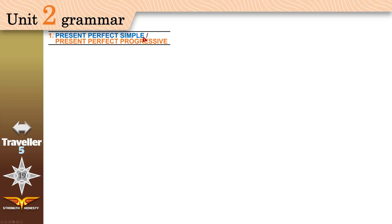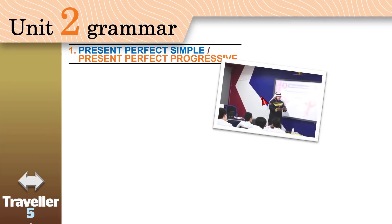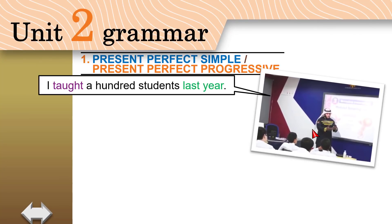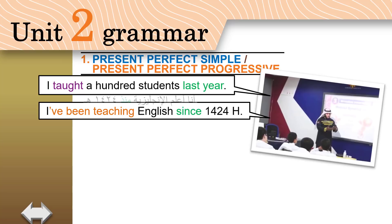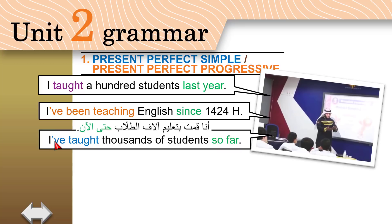Present Perfect Simple and Present Perfect Progressive. That's me as a teacher. I taught a hundred students last year — 'taught' is the past of 'teach.' I've been teaching English since 1424. I've taught thousands of students so far.